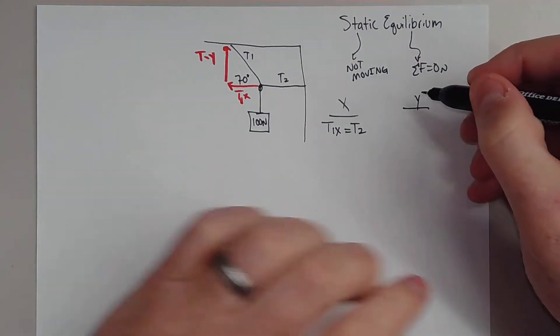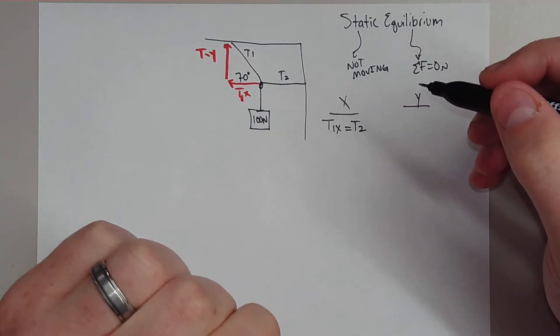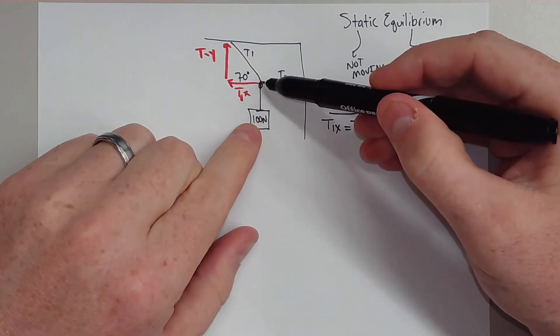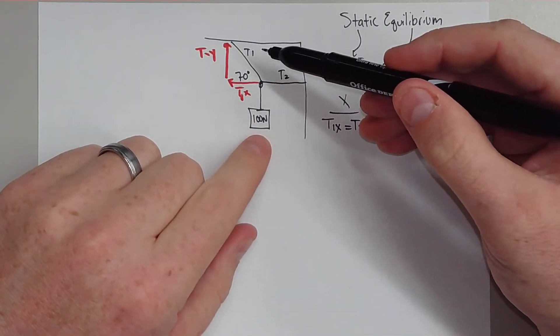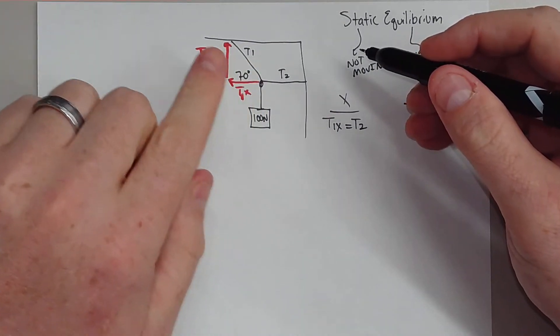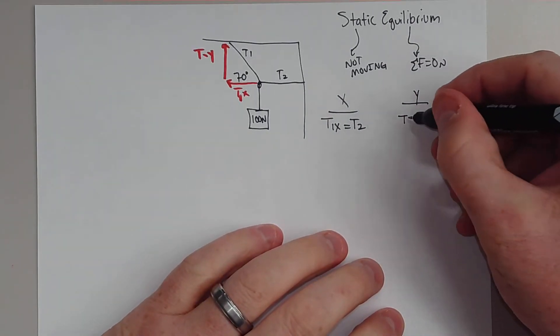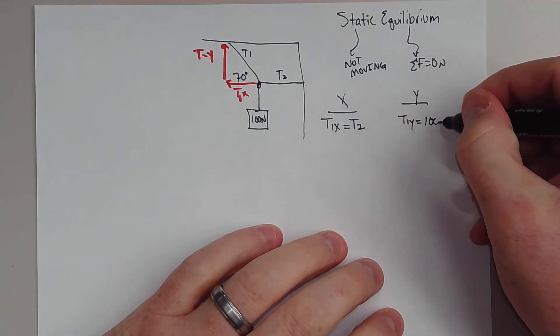In the Y direction, we'll see that T1Y actually has to equal 100, because if you think about it, there's really only one vertical component holding up this 100 newtons. That's not the actual tension in that rope, because it's at an angle, but the vertical component of it has to be equal to 100. So T1Y must equal 100 newtons.